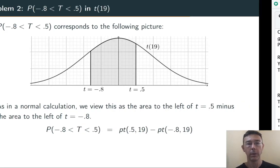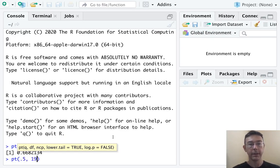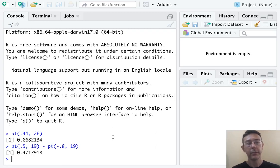So let's swap over to R and do these two. We need to do PT of 0.5, 19 minus PT of negative 0.8, 19. And this time we get 0.472 approximately.